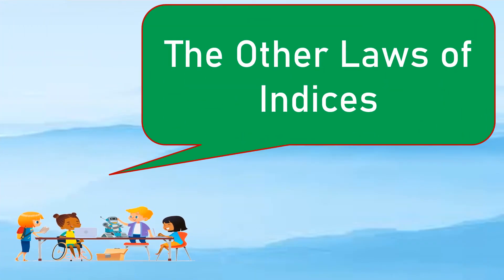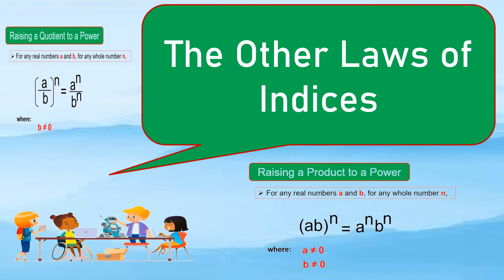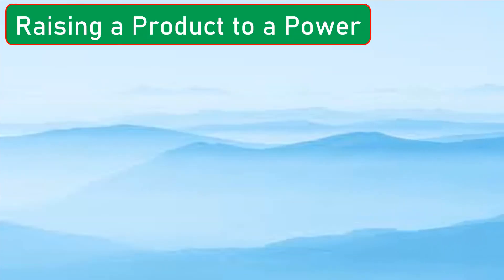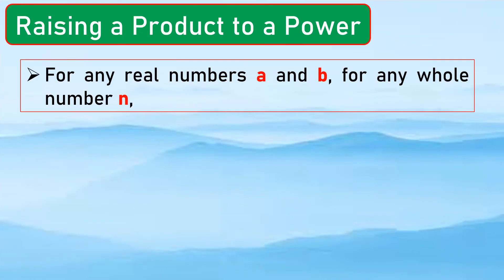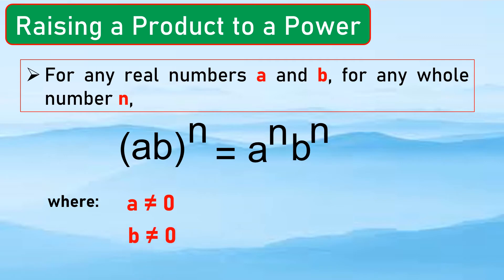Now let us have the other laws of indices: raising a product to a power. For any real numbers a and b, and any whole number n, (ab) raised to n is equal to a to the n times b to the n. You just distribute n inside the parentheses, where a and b are not equal to 0.